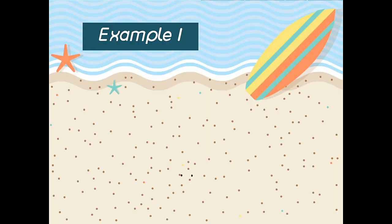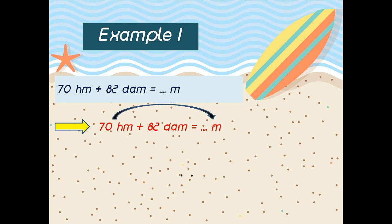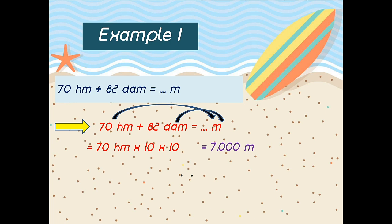Example number one: 70 hektometer plus 82 dekameter is how many meters? The answer. First, from hektometer to meter — up or down? Good, down. How many steps? Yeah, two. So the answer: 70 hektometer times 10 times 10 is 7000 meter.